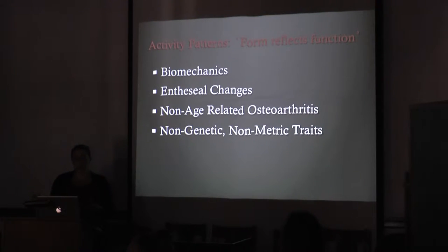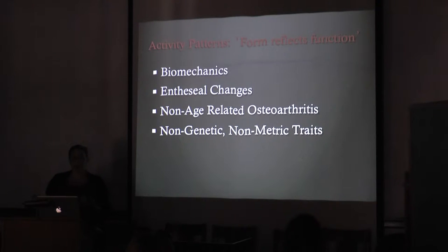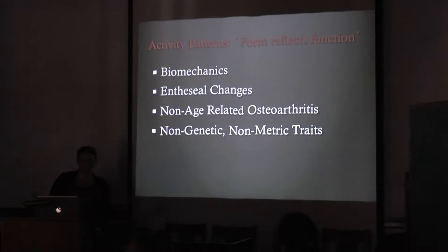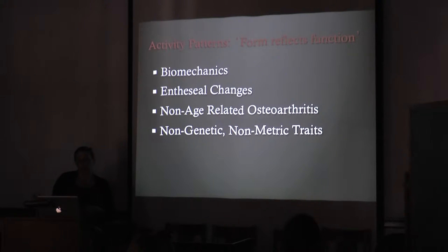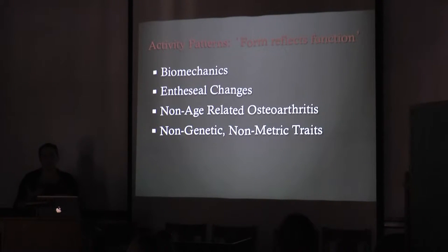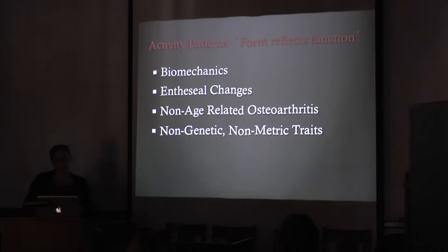Thus, for bone, form reflects function. Clinical and osteological studies have provided evidence that spinal morphology, patterns of non-pathological osteoarthritis, characteristics of the size and robusticity of muscle insertion sites (also known as entheseal changes, or ECs), cross-sectional geometry of long bones, and the presence and degree of expression of a variety of non-genetic non-metric traits can all be correlated with general patterns of activity. For example, these would include expansion of an articular surface area or a facet linked to squatting.